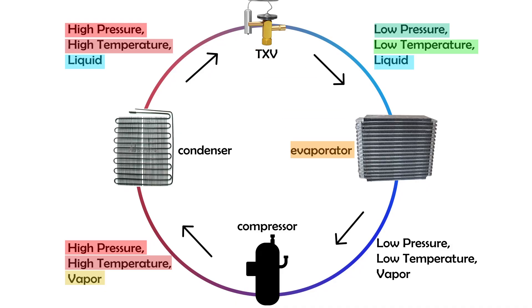Inside the evaporator, the refrigerant absorbs heat from the surrounding air, typically from inside a room or a building. As it absorbs heat, it boils and changes state from liquid to vapor, another phase change. The result is low-pressure, low-temperature vapor, which is exactly what the compressor needs to start the cycle again.